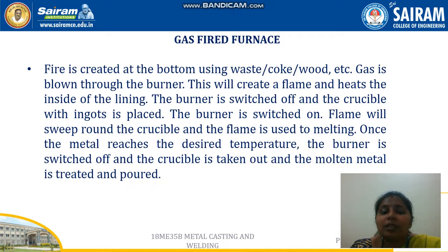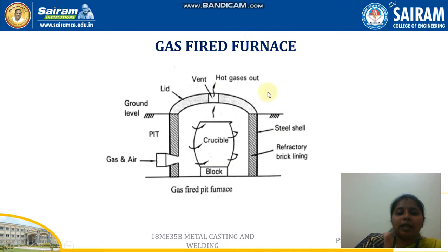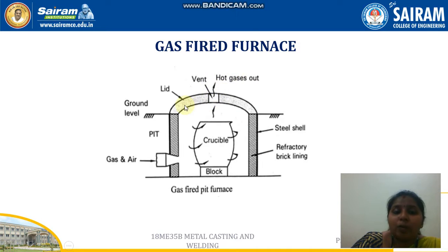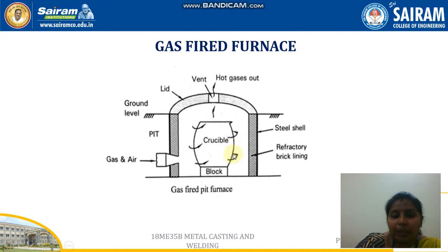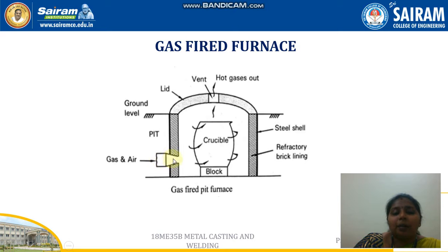Once the metal reaches the desired temperature, the burner is switched off, the crucible is taken out, and the molten metal is treated and poured. This is the arrangement of a gas-fired furnace. It is kept below ground level and has a lid through which hot gases can escape. By opening the lid the crucible can be removed. There is a refractory lining with a steel shell covering it, and there is a provision for gas and air to enter.